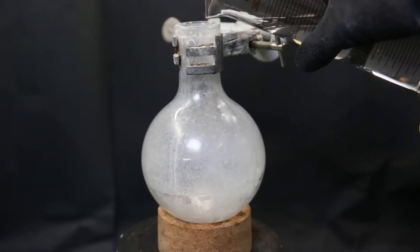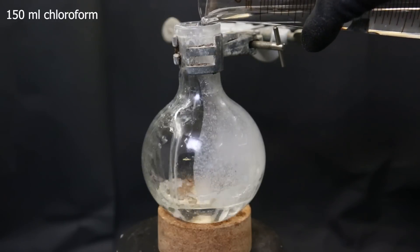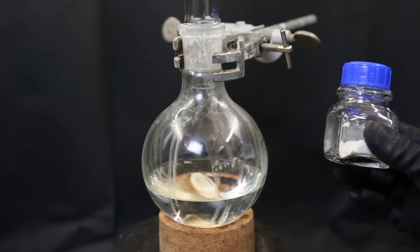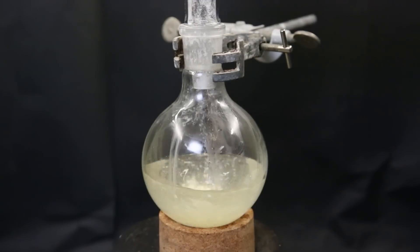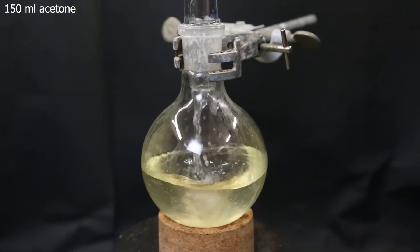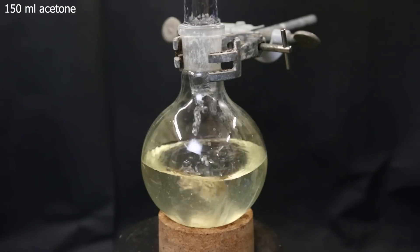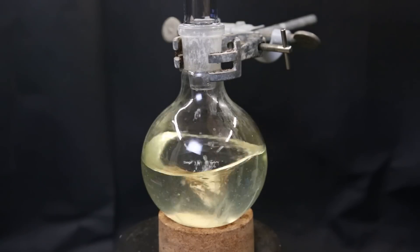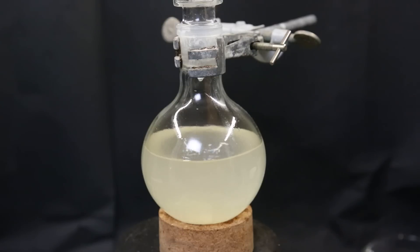So to the flask that still contains a bit of the product, I add in 150 ml of chloroform. Then to the chloroform, I add in all of the product that I collected. When it looked like most of it had dissolved, I added in 150 ml of acetone. I let it stir for a while, and we can see that the mixture has turned cloudy.